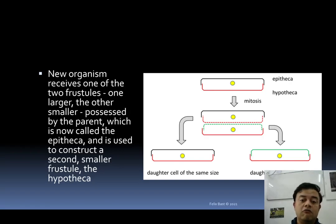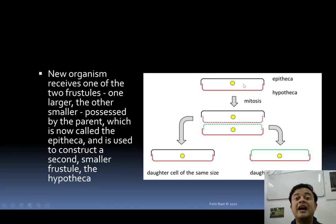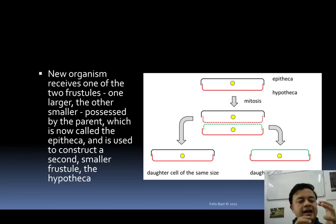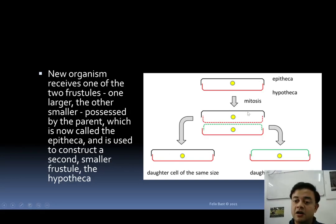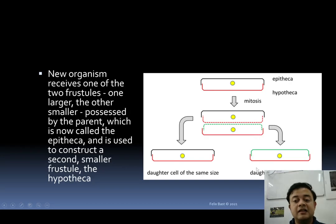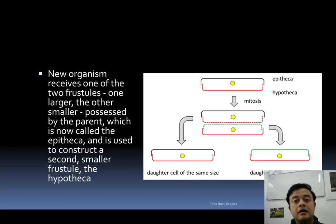Diatom reproduction is also quite fascinating. Each new organism receives one of the two frustule halves — like a petri dish. The larger half is called the epitheca and the smaller one the hypotheca. When they separate, each produces a complementary frustule: the epitheca produces a smaller one, and the hypotheca produces one smaller still. So the daughter cell receiving the hypotheca ends up reduced in size.